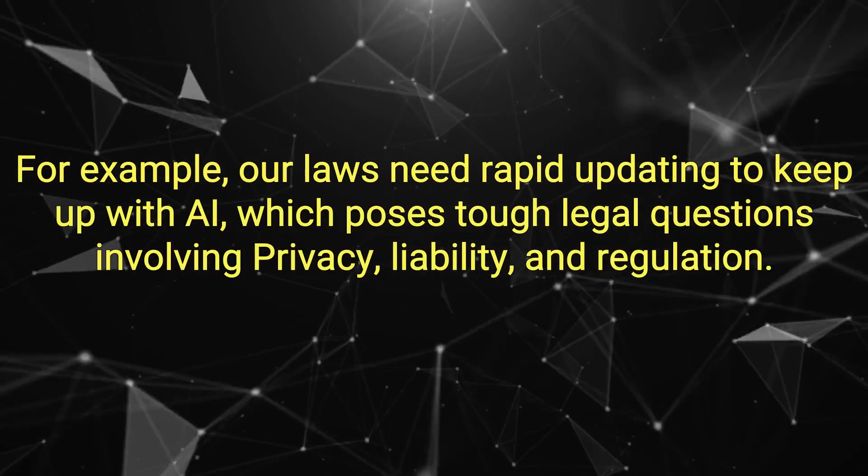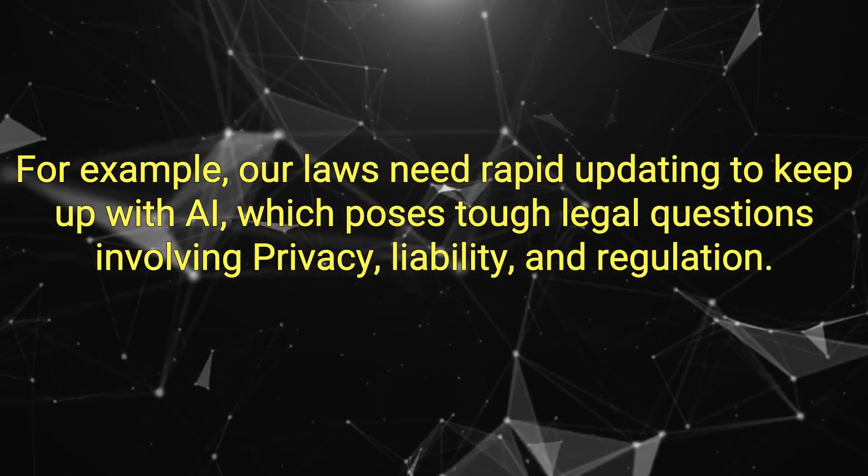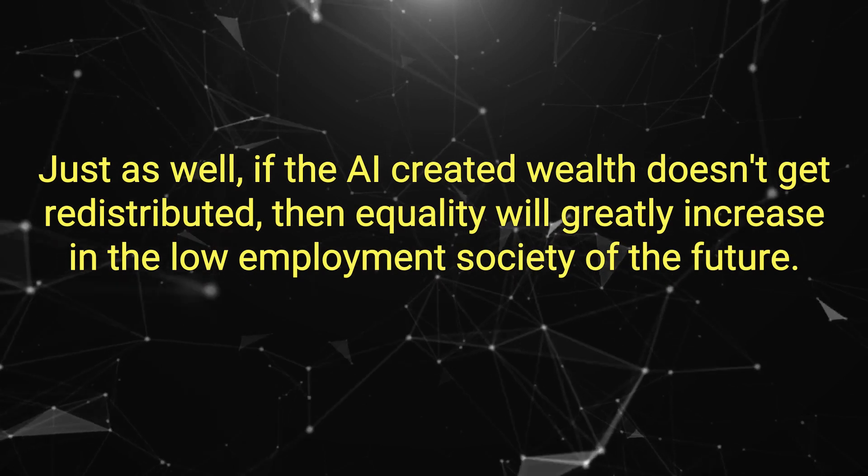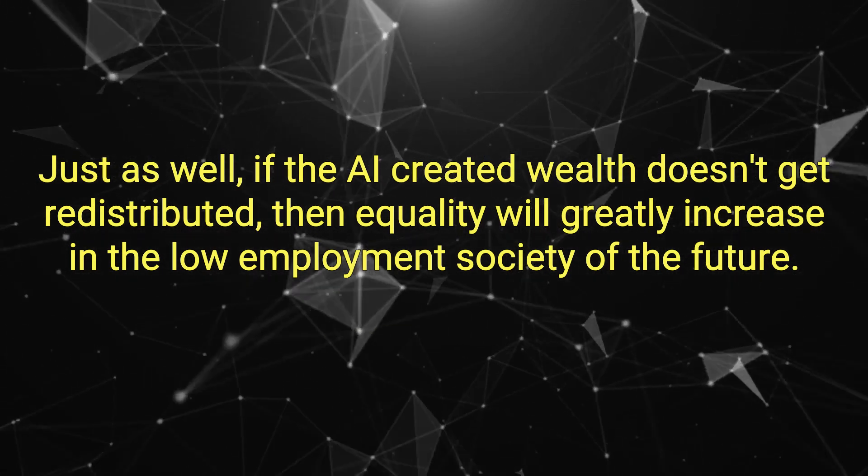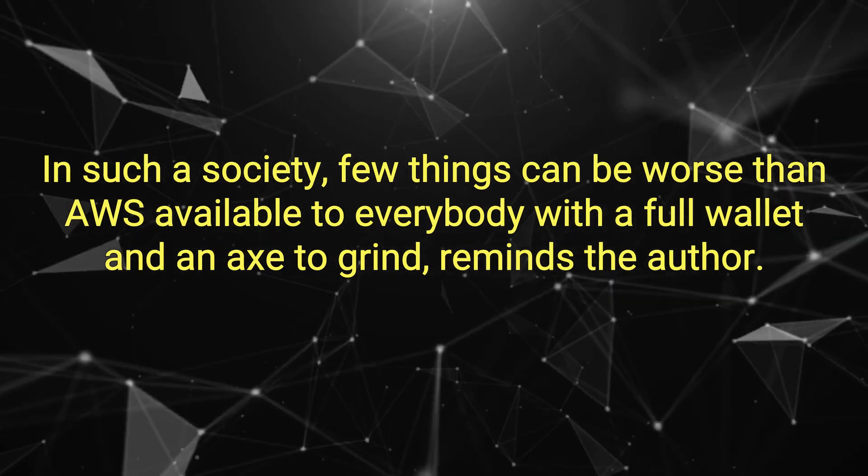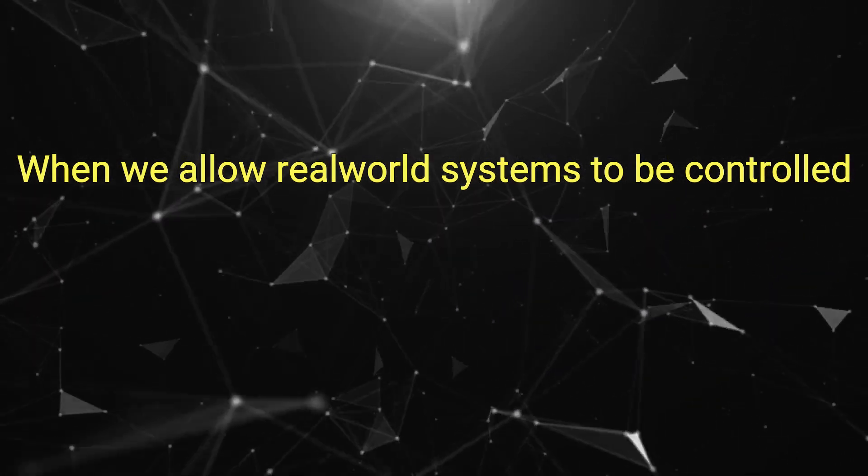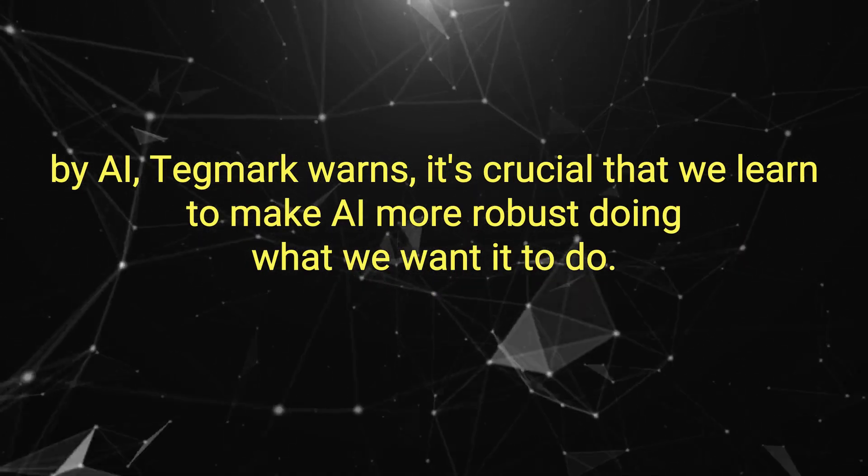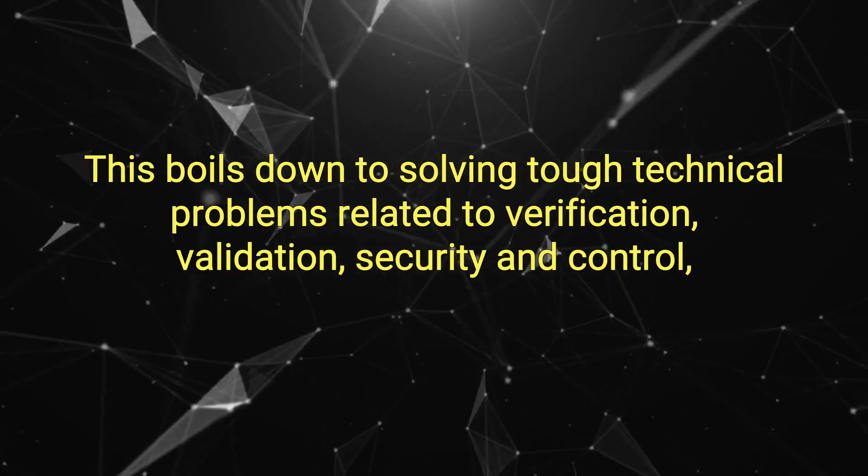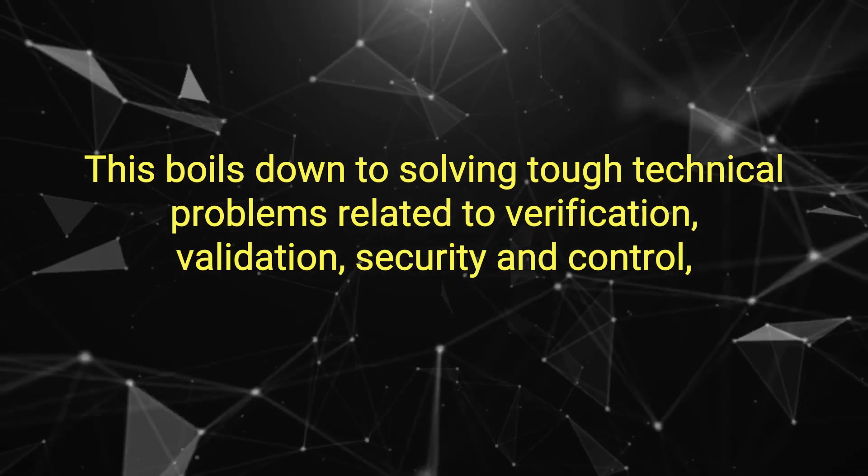For example, our laws need rapid updating to keep up with AI, which poses tough legal questions involving privacy, liability, and regulation. Just as well, if the AI-created wealth doesn't get redistributed, then inequality will greatly increase in the low-employment society of the future. In such a society, few things can be worse than AWS available to everybody with a full wallet and an axe to grind, reminds the author. When we allow real-world systems to be controlled by AI, Tegmark warns, it's crucial that we learn to make AI more robust, doing what we want it to do. This boils down to solving tough technical problems related to verification, validation, security, and control.